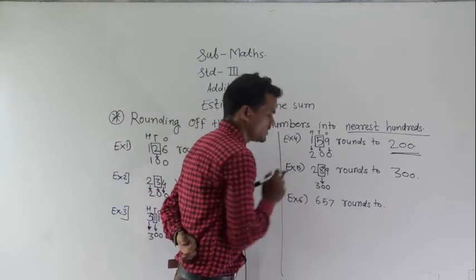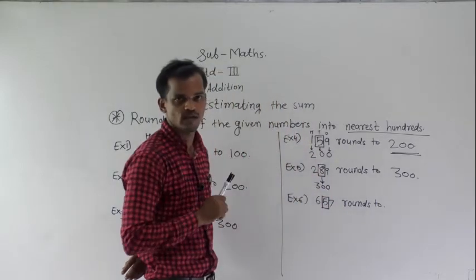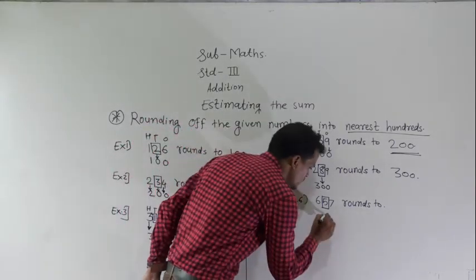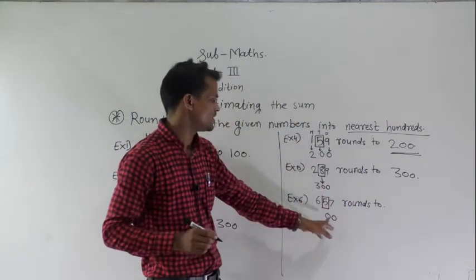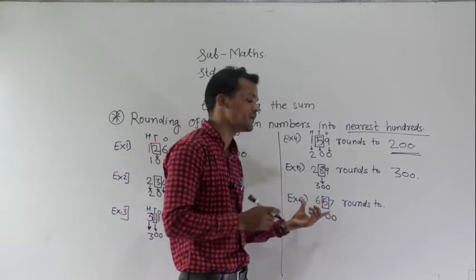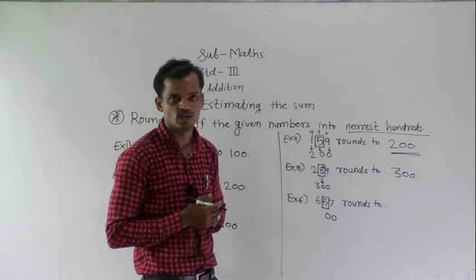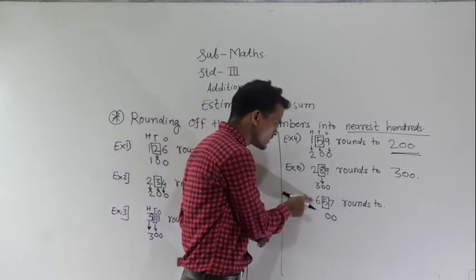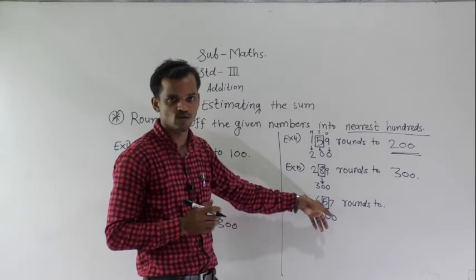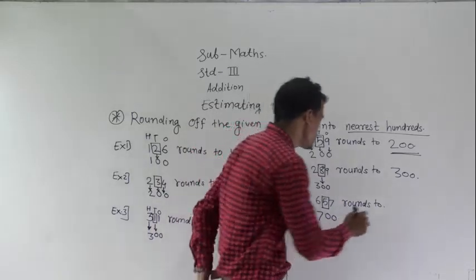Next: 657 rounds to nearest 100. The tens place digit is 5, so this number will be rounded up. Write 0 at the tens place and 0 at the ones place. Add 1 into the hundreds place digit: 6 plus 1 equals 7. So 657 rounds to 700.